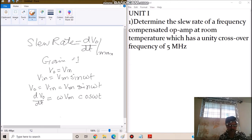What will be the maximum value of dVo by dt? That will be the maximum value of cos omega t. We know cos omega t varies between minus 1 to 1, so the maximum value will be 1. Therefore, the maximum value of dVo by dt will be omega Vm, which is 2 pi f Vm. So the slew rate is given by 2 pi f Vm.